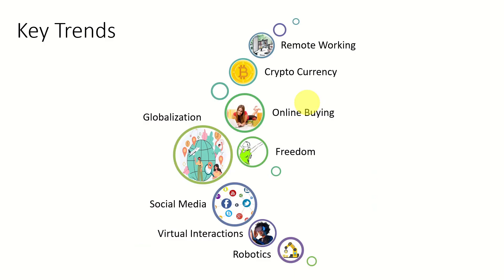One of the great results of the information era was globalization, which brought the entire world closer together due to advancements in information technology and transportation. People are doing more and more online buying and interacting more with social media. People are using cryptocurrency and doing remote working, while technologies like virtual interactions, robotics, and artificial intelligence are dominating the information era.